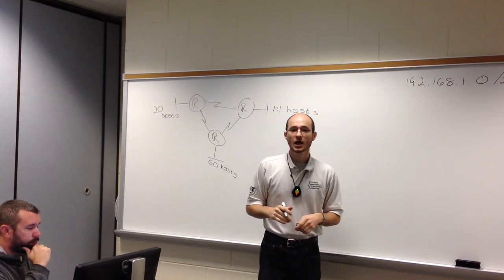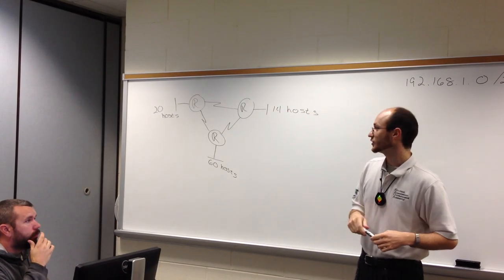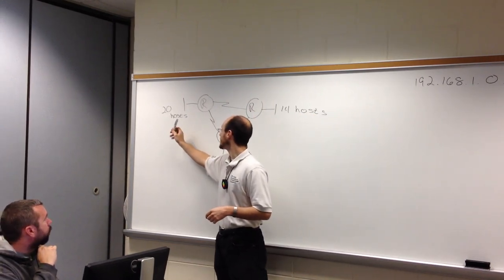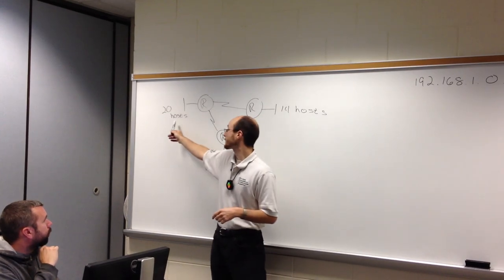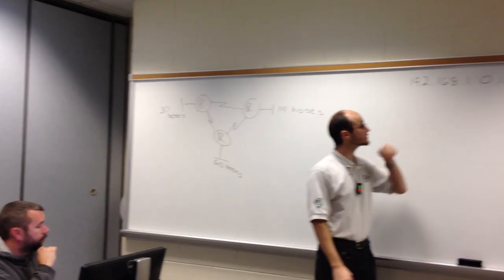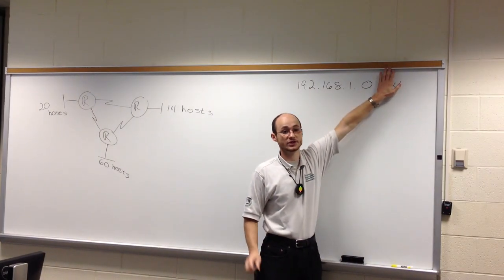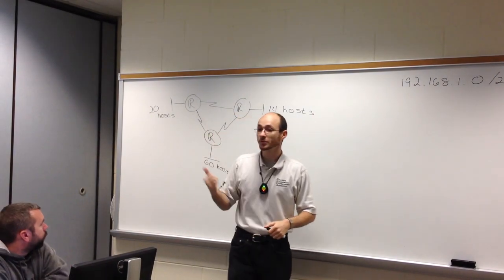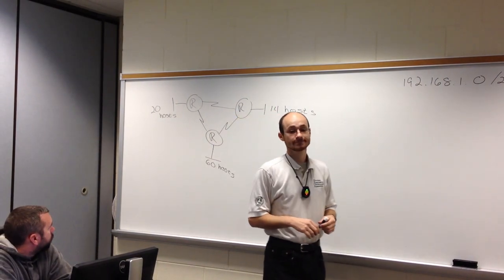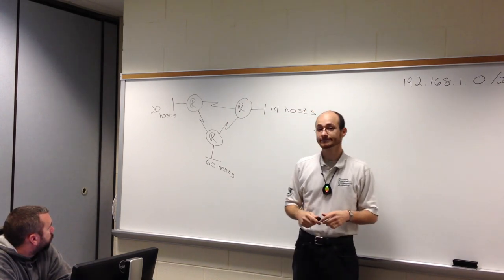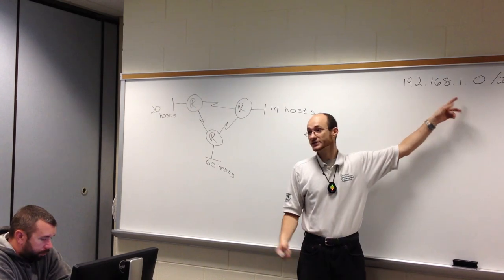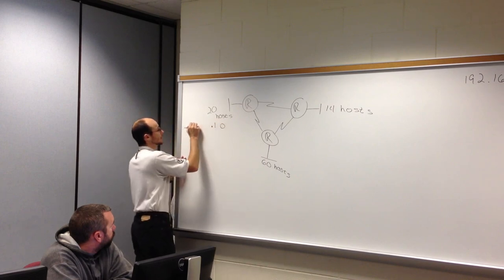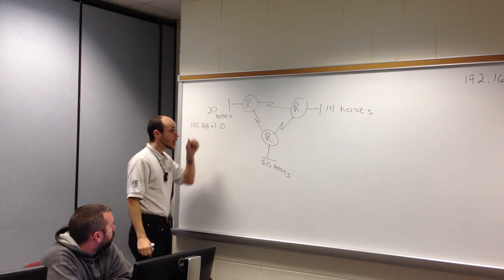Starting from the first week learning about addressing, we discovered classical addressing. What network address would I give these groups of hosts using classical? In a classical environment, you ignore the subnet mask or prefix. If I wanted to use a class C private address and assign a network address to a group of hosts, I'd use 192.168.1.0 for the first one.